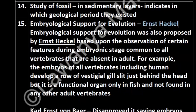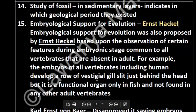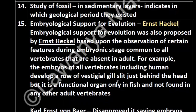Who provided embryological support for evolution? Ernst Haeckel. He told us based upon the observation of certain features during the embryonic stage that are common to all vertebrates but absent in adults. For example, embryos of vertebrates including humans develop a row of vestigial gill slits just behind the head, but it is a functional organ only in fish. So many vertebrates share a common ancestral feature.